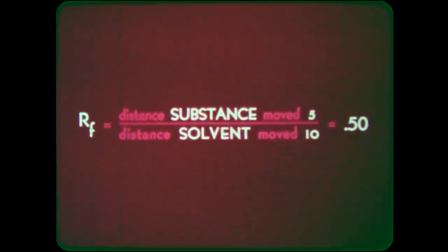On this chromatogram, the solvent moved 12.5 centimeters measuring from the first pencil line to the solvent front. Carotene moved 12 centimeters and therefore has an RF value of 0.96. Xanthofil moved 8 centimeters and has an RF value of 0.64.